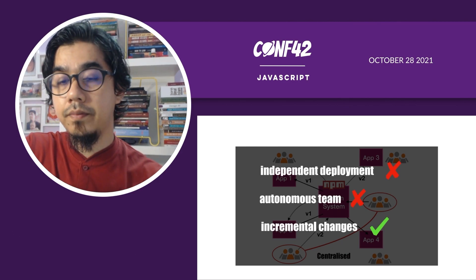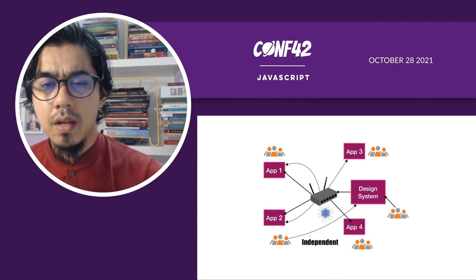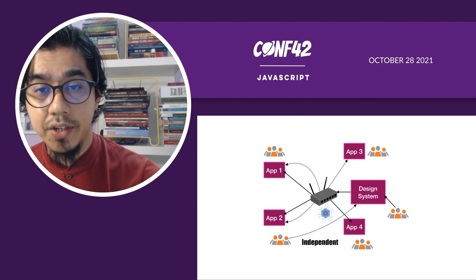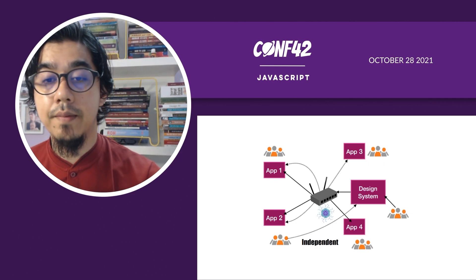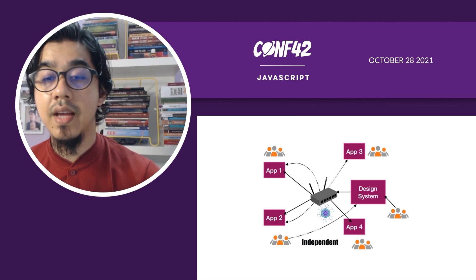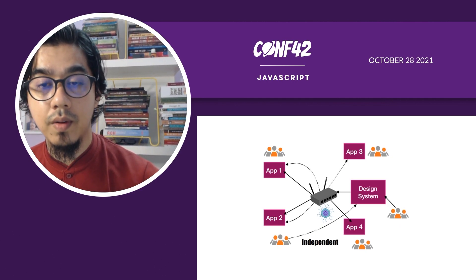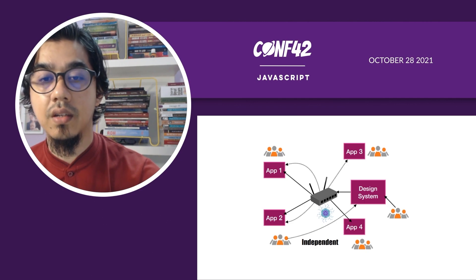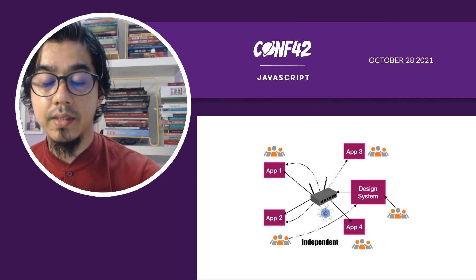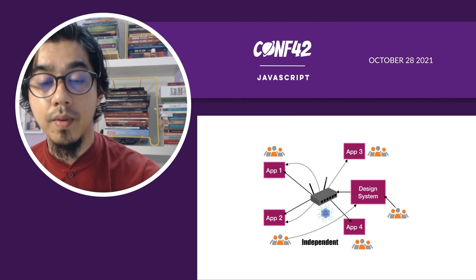The second pattern is called the independent design system. The independent design system usually uses module federation provided by Webpack. By using module federation we are able to make the design system behave like an application, because it can be independently deployed into production. Once deployed, consumers of the design system — configured to fetch the design system components through the network — will see changes reflected without needing to recompile or redeploy.